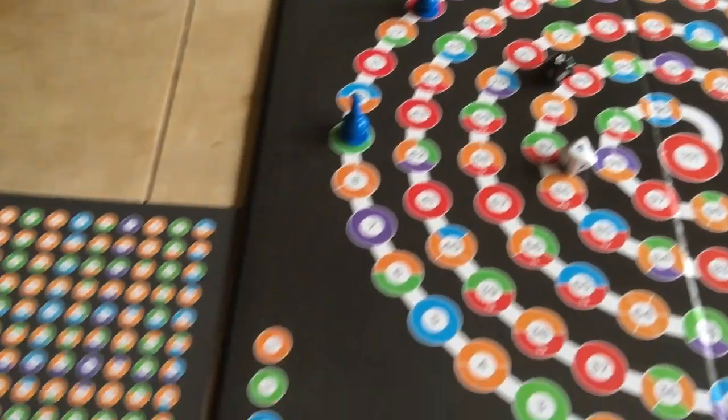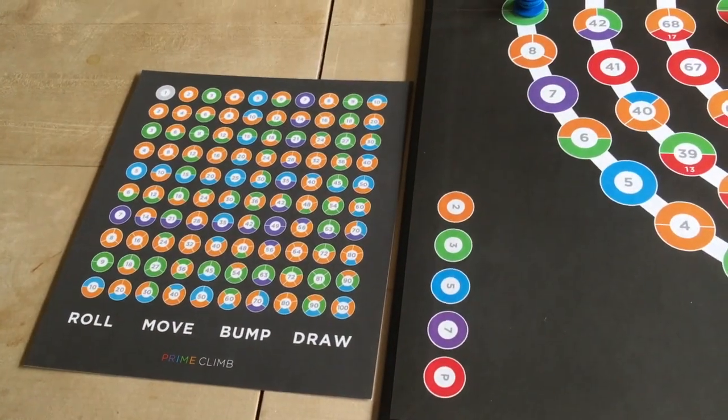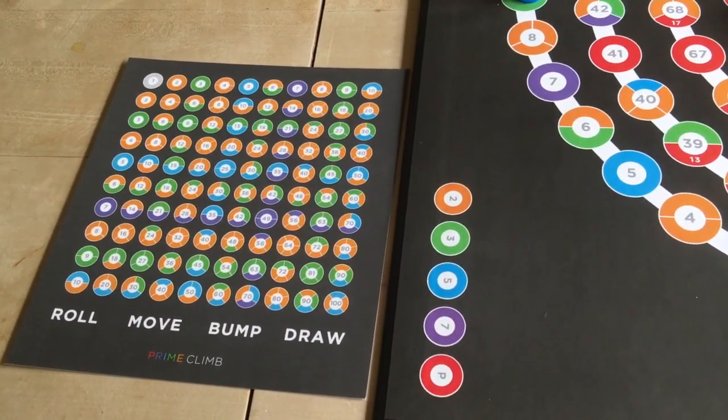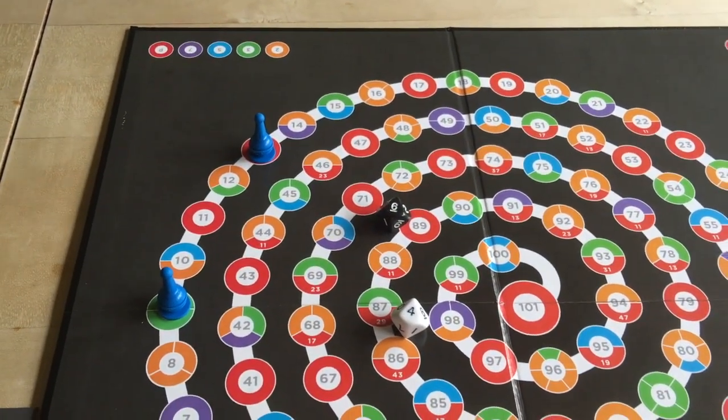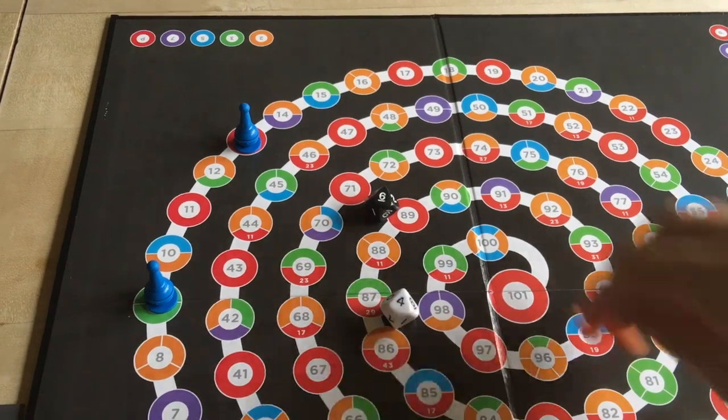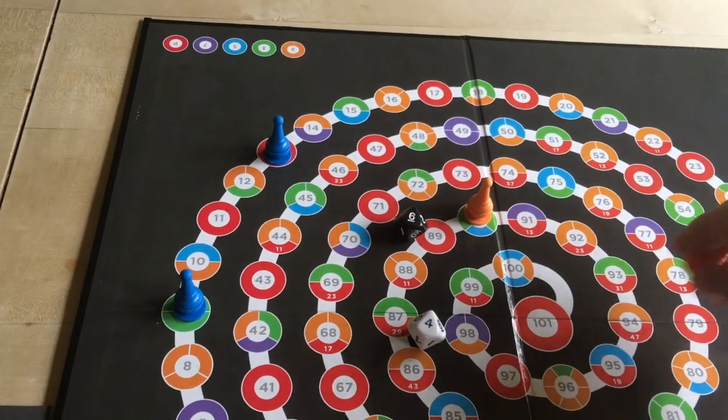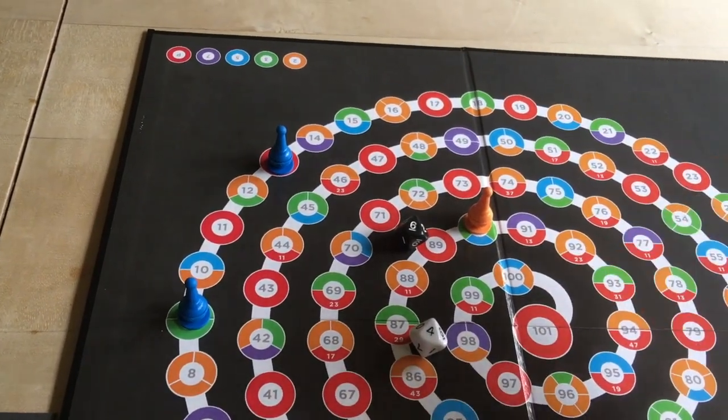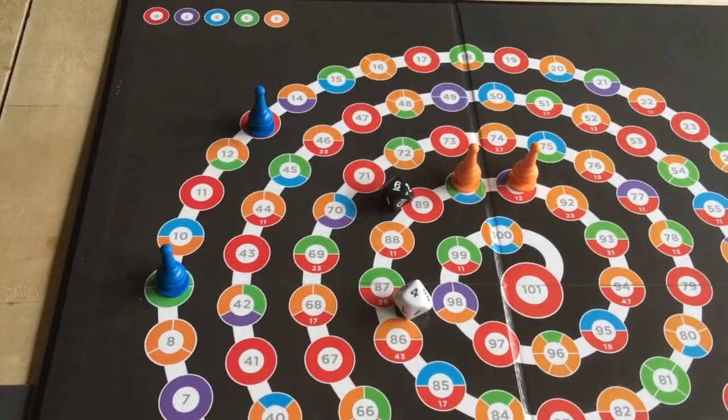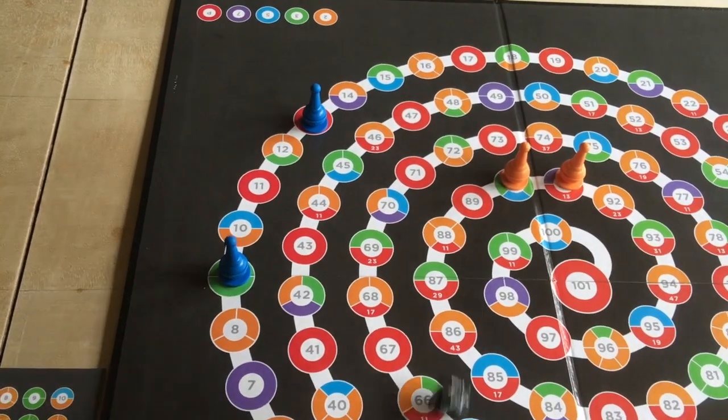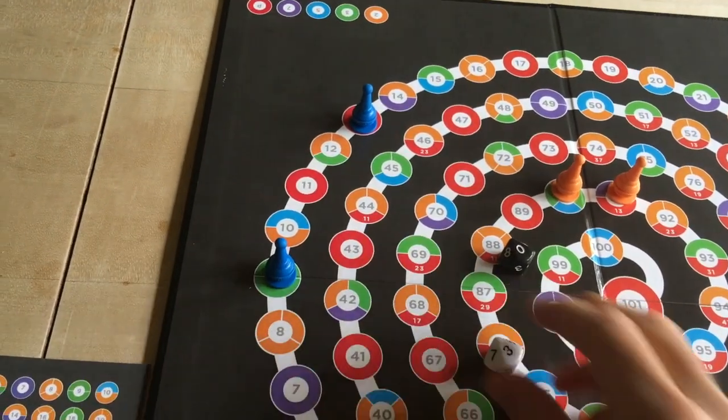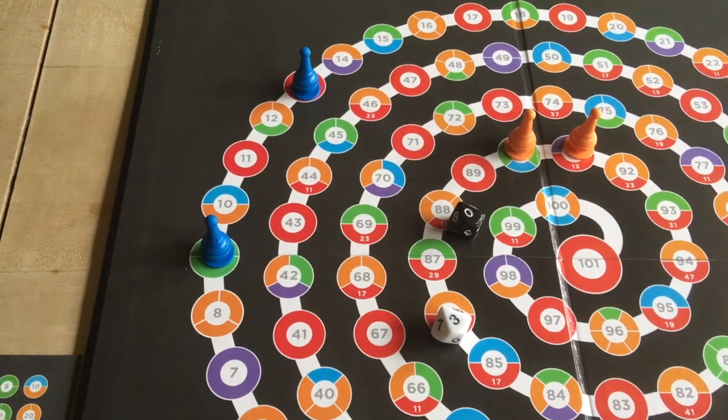Sometimes you're done right there at the end of your turn, but there's two other things that could happen. After you roll and after you move, you could bump or draw. I'm going to show you those. Let's say I'm playing an opponent, and they're already at 90 and 91. I roll and get a 10 and a 3.